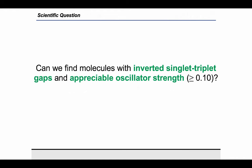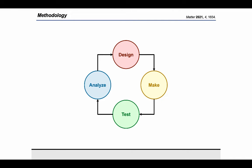So we asked ourselves, can we find molecules with inverted singlet-triplet gaps and appreciable oscillator strengths? To answer these questions, we set up a virtual design-make-test-analyze cycle to perform a multi-objective property optimization of the singlet-triplet gap and the oscillator strength via quantum chemical calculations.